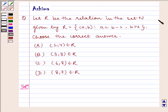Let R be the relation in the set N given by R = {(a,b): a = b-2, b > 6}. Choose the correct answer.